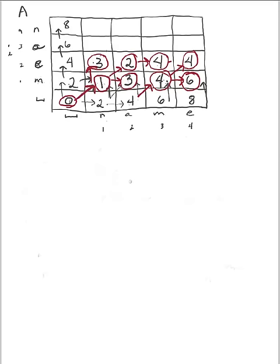Let's continue this problem of matching the string 'mean' against the string 'name' from where I left off. I want to compute the cost right here, and there are three ways to get there. One is to advance on the mean string but keep the name string where I currently am, which means inserting a gap into the name string. Inserting a gap adds a cost of 2, so 3 plus 2 gives me 5.